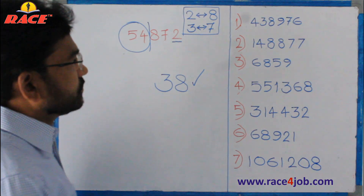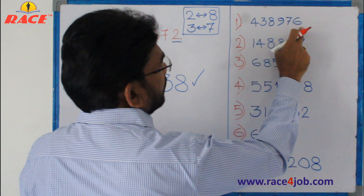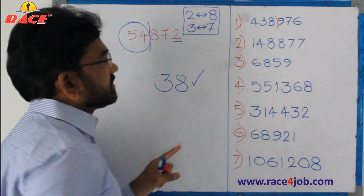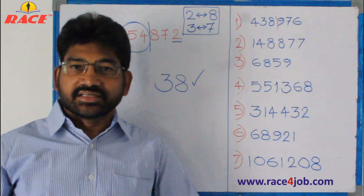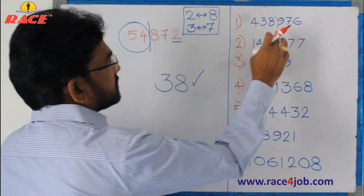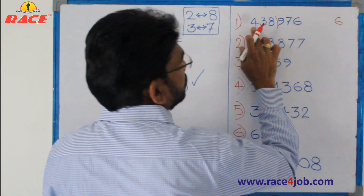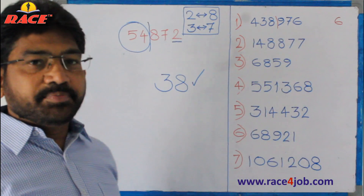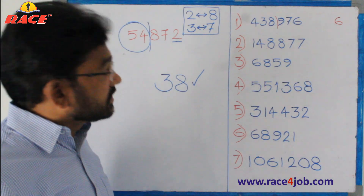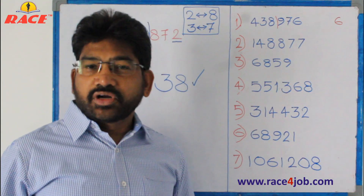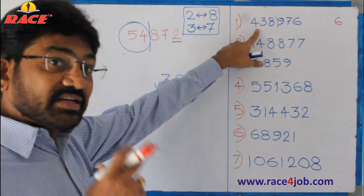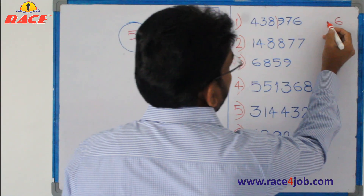Now let us find cube roots for some examples, which is very easy. First example: divide into right side of three digits. The right side part is ending with six — six means the same six comes in the answer. The left side part is 438. 438 is between which two perfect cubes? Seven cubed is 343, eight cubed is 512. So 438 is between seven cube and eight cube. The smaller is seven. Therefore 76 is our answer.